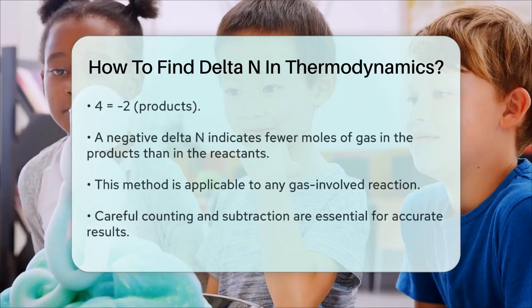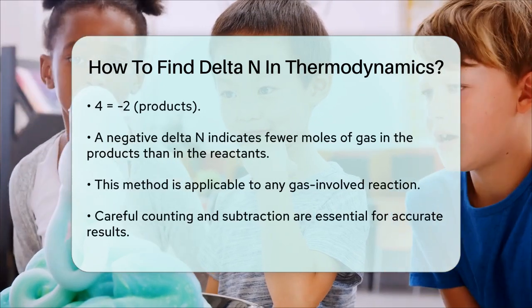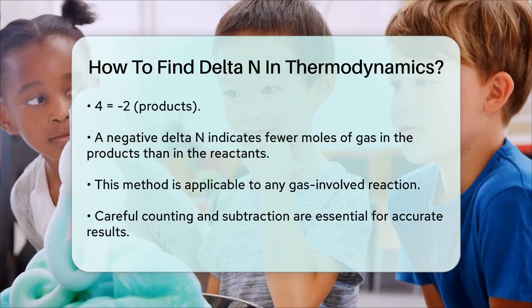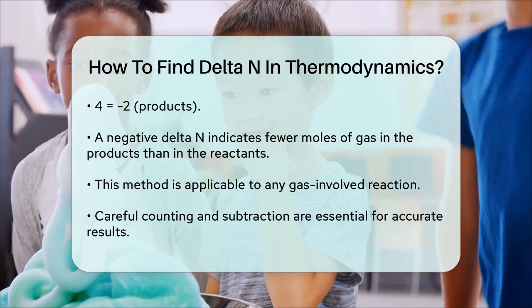This method applies to any reaction involving gases. Just remember to count the moles of gases carefully and subtract the moles in the products from the moles in the reactants to find delta N.